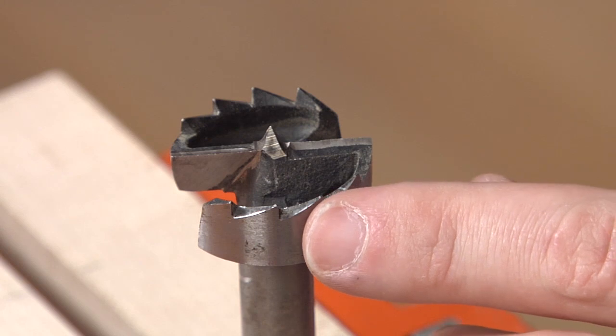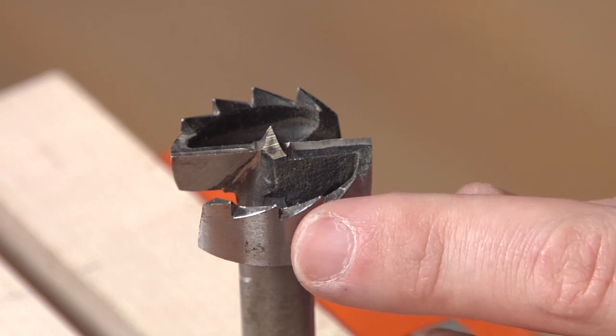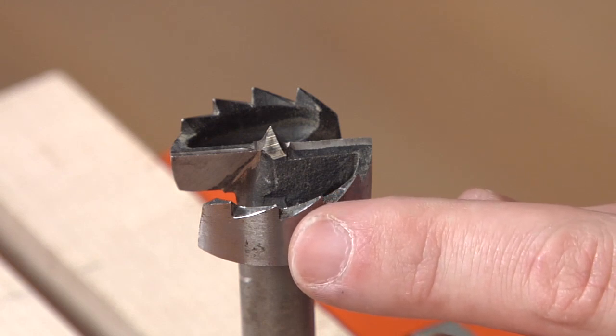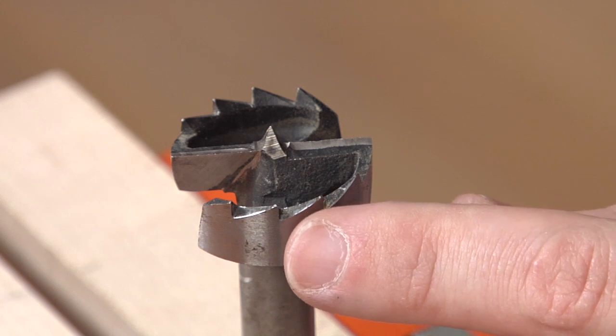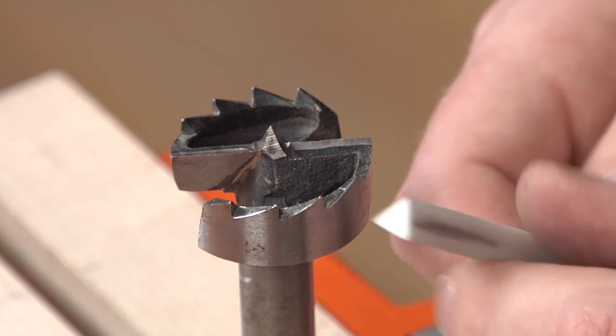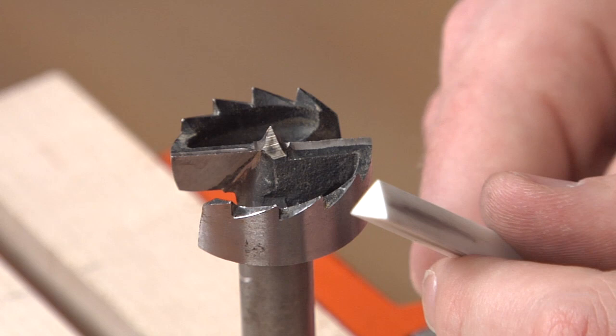Now if your bit has these serrated teeth, we're going to skip that round slip stone, and we're going to go straight to sharpening the backs of each of these teeth. And to do that, we're going to use our triangle slip stone.